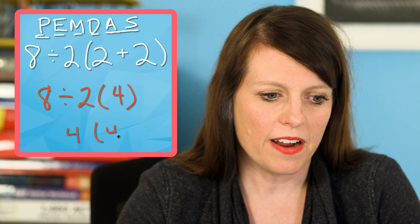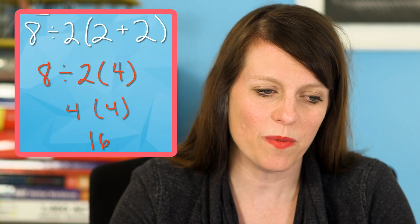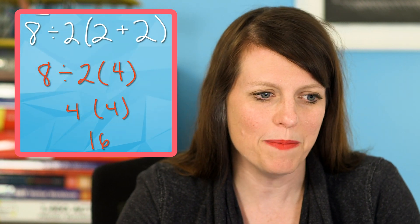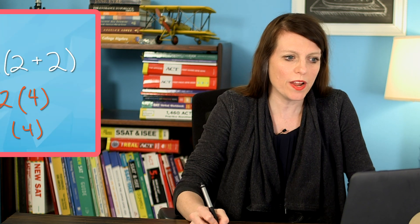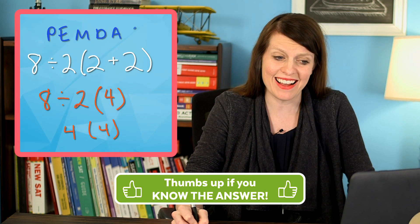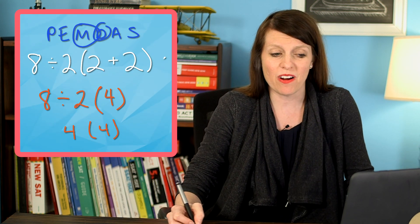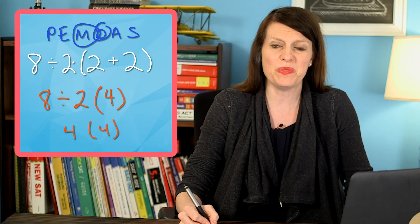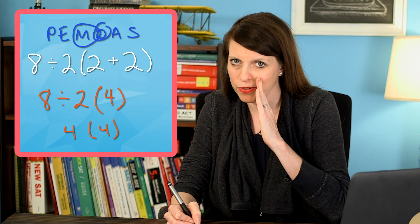Then we do 8 divided by 2, which is 4, and then 4 times 4, which would be 16. So that's one way to solve this problem — you would think the answer is 16. But a lot of people are up in arms about this. One reason is that in PEMDAS, M comes before D, so some people argue you should do the multiplication first — which I don't actually think is the rule of PEMDAS.